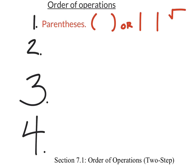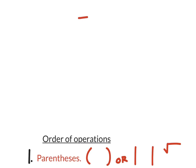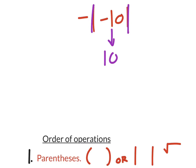For example, when we saw a problem with an absolute value, you would do the absolute value first, which would give you 10, and then you would apply the negative. That's an order of operations problem because it forces us to do the parentheses or absolute values first.